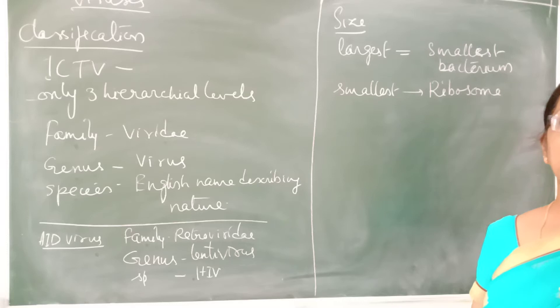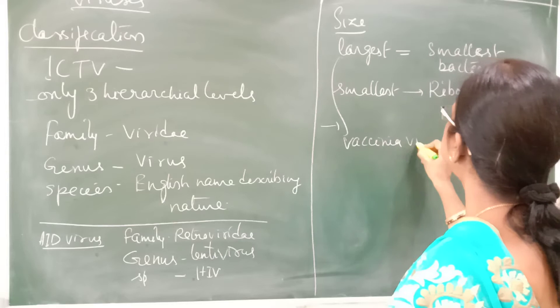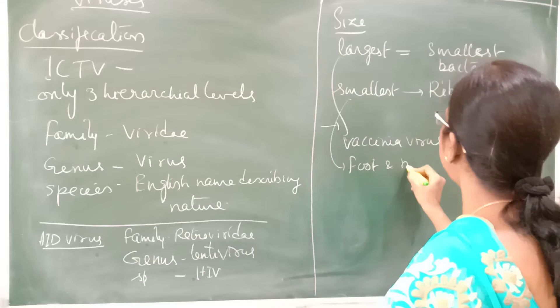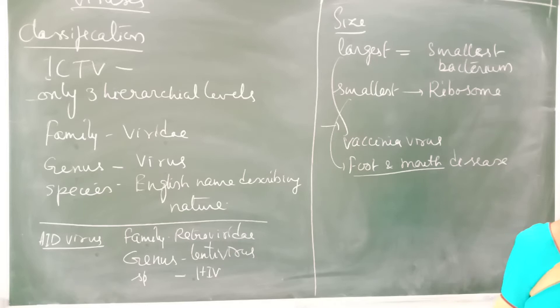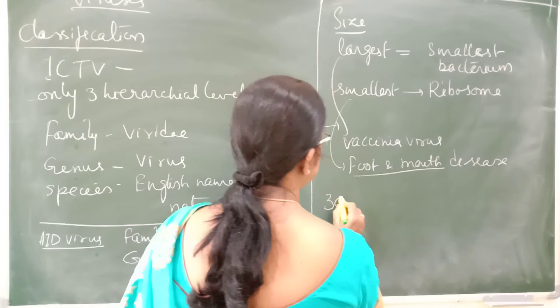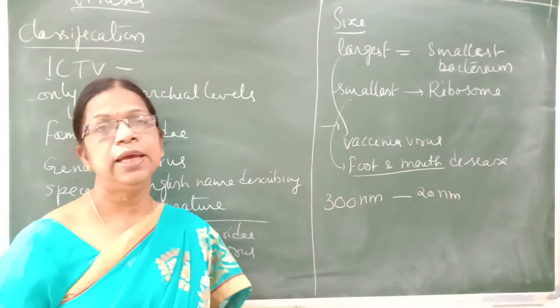The largest virus example is the vaccinia virus. The smallest one is the foot and mouth disease virus in cattle. In general, the size of a virus ranges between 300 nanometers on the larger side to about 20 nanometers on the smaller side.